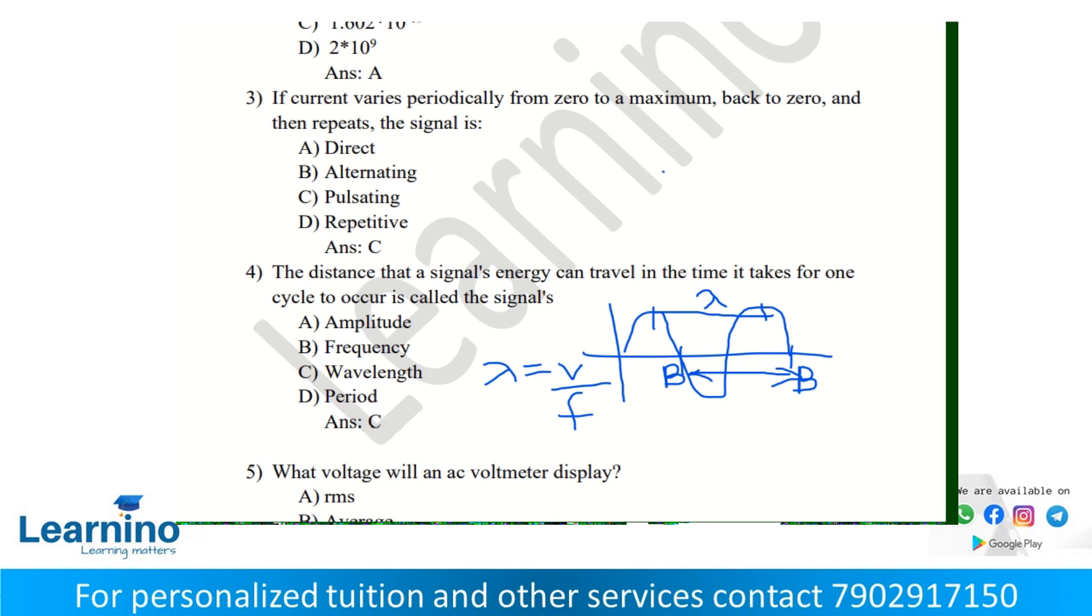The distance that a signal energy can travel in the time it takes for one cycle to occur is called wavelength. For example, in a sine wave, it's the distance between adjacent identical points in adjacent cycles. The wavelength lambda equals velocity divided by frequency. The answer is C.